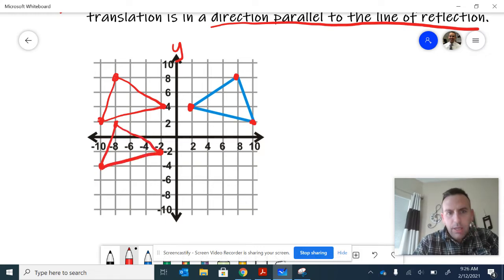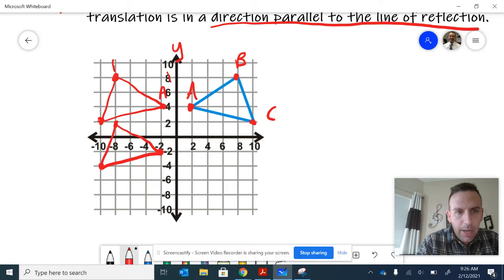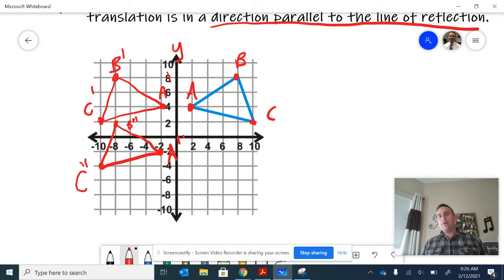So the way you would label this: if the original was A, B, C, the reflected image would be A prime, B prime, C prime. If you make another movement, you use double prime: A double prime, B double prime, C double prime.